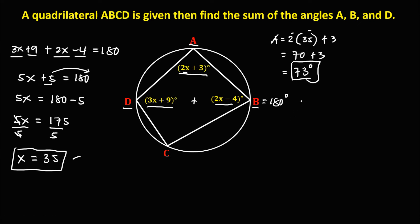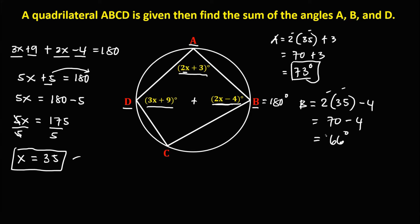For angle B, from this equation, we have 2 times x — x is 35 — then minus 4. So 2 times 35 is 70, and 70 minus 4 — angle B is 66 degrees.